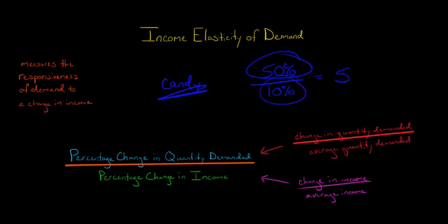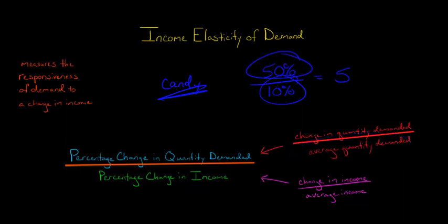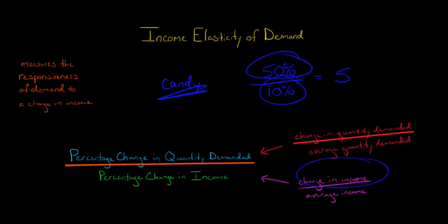To calculate the numerator — the percentage change in quantity demanded — we take the change in quantity demanded divided by the average quantity demanded. And to get the denominator, the percentage change in income, we take the actual change in income divided by the average income.